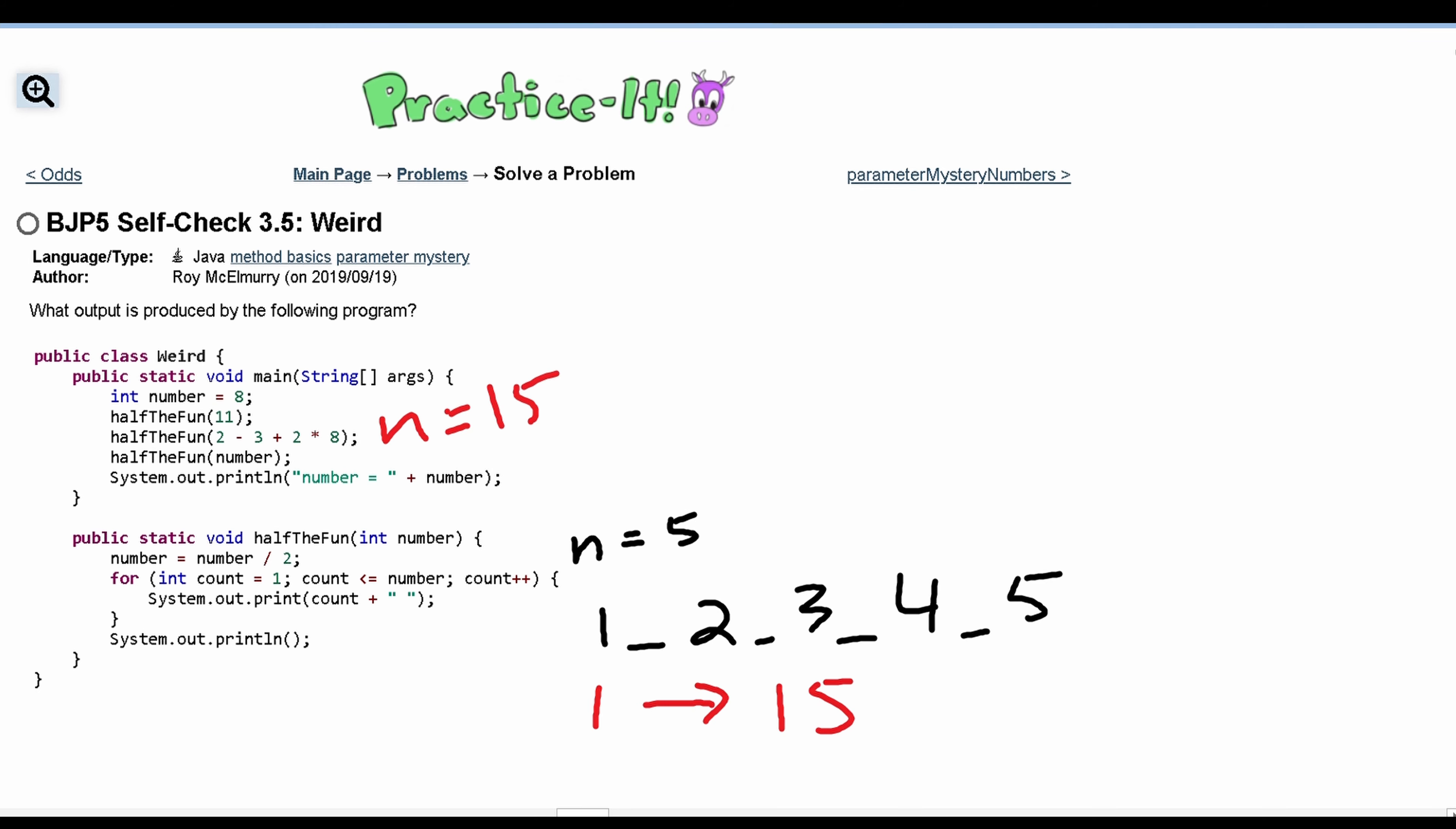Next we have halfTheFun number right here and what this is doing is it is taking this number right here, this 8 that we declared and initialized. So we're passing in n is equal to 8.